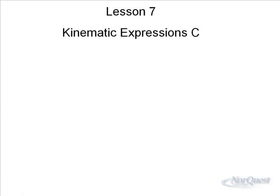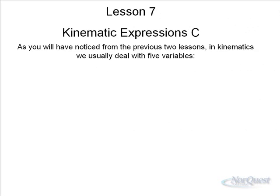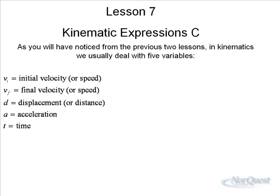What we have here is an algebraic exercise. I won't spend too much time going over this, but just so you can watch. Here are the five variables, as you will have noticed from previous lessons. The five variables that we deal with in kinematics, which is the study of motion, are v_i (initial velocity), v_f (final velocity), d (displacement), a (acceleration), and t (time).